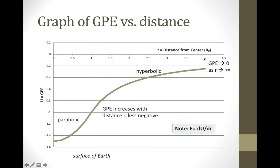The potential energy goes to zero as r becomes infinitely large. Notice the potential energy is always increasing with distance — it is becoming less negative. So we see the potential energy get larger as you move farther away. As you do work and move something farther away, you do gain potential energy, though it really means you're losing negative potential energy. That is our graph of the potential energy as a function of distance.